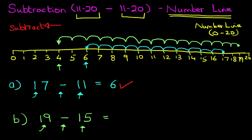What number have we landed on? It is 4. 19 minus 15 equals 4. And that is the correct answer. So that is how we use the number line for subtraction of numbers up to 20.